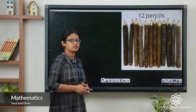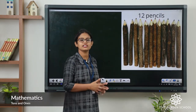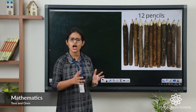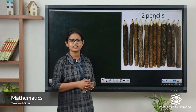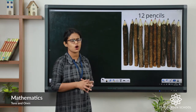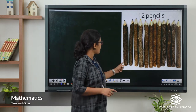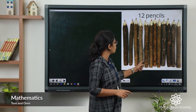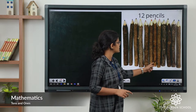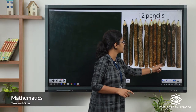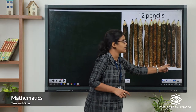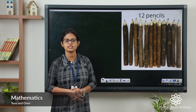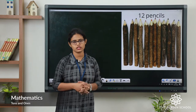Next you can see pencils here. So how many pencils are there? Let's count: 1, 2, 3, 4, 5, 6, 7, 8, 9, 10, 11, 12. So how many pencils? 12 pencils.